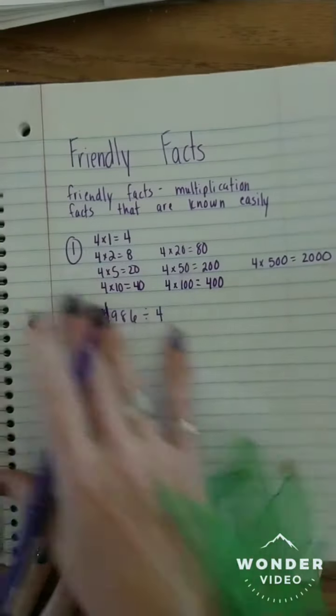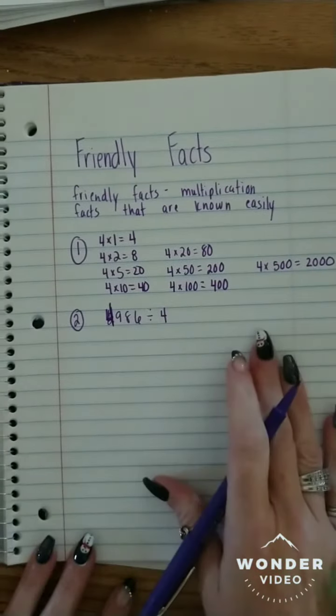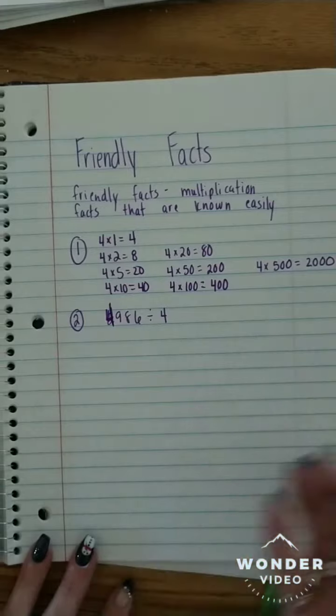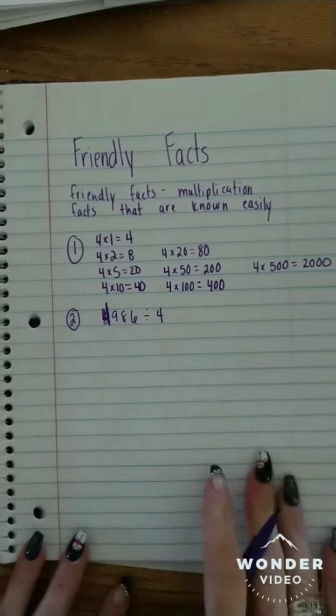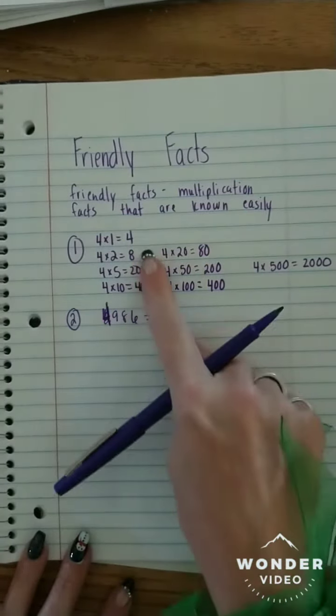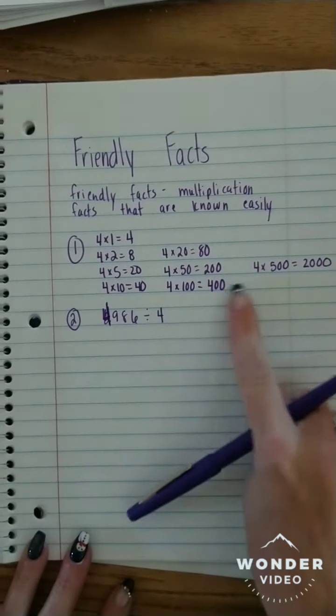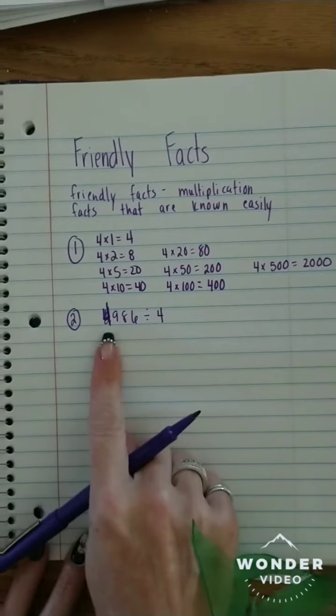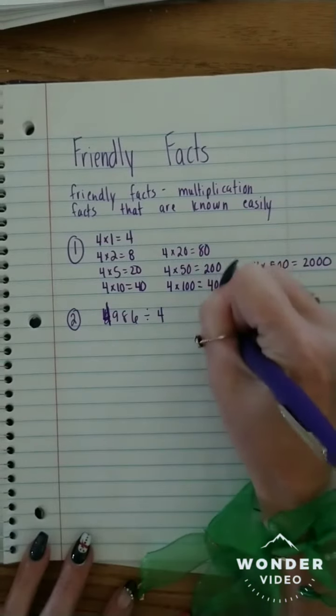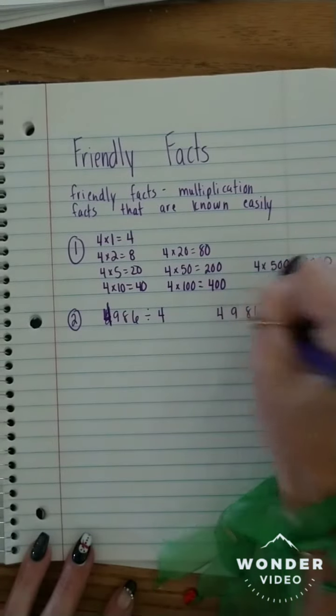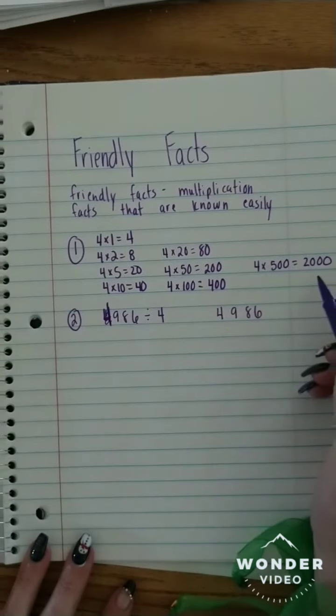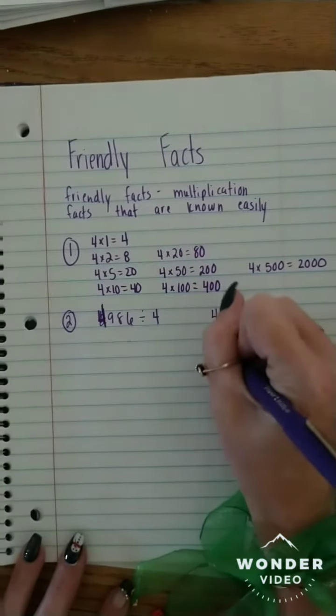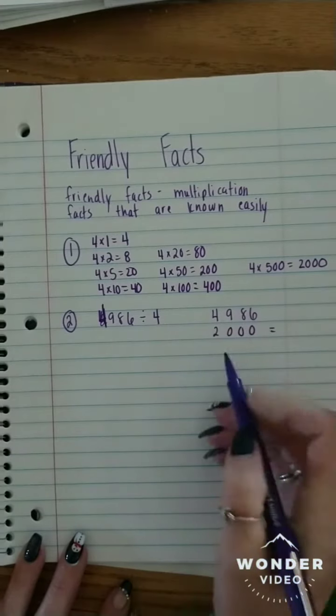So I'm looking at my friendly facts here, and I want to take out the biggest chunk that I have. So when I'm looking at my multiples, I have 4, 8, 20, 40, 80, 200, 400, and 2000. Since this is 4,986, I'm going to go ahead and write it over here. I want to subtract out the biggest chunk I can. So I'm going to subtract out 2,000.